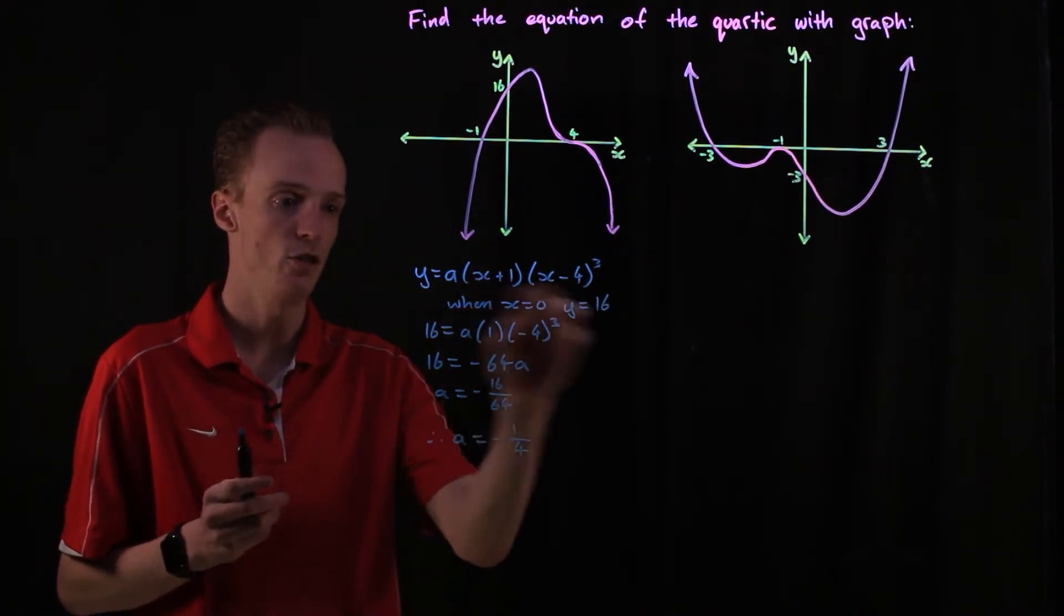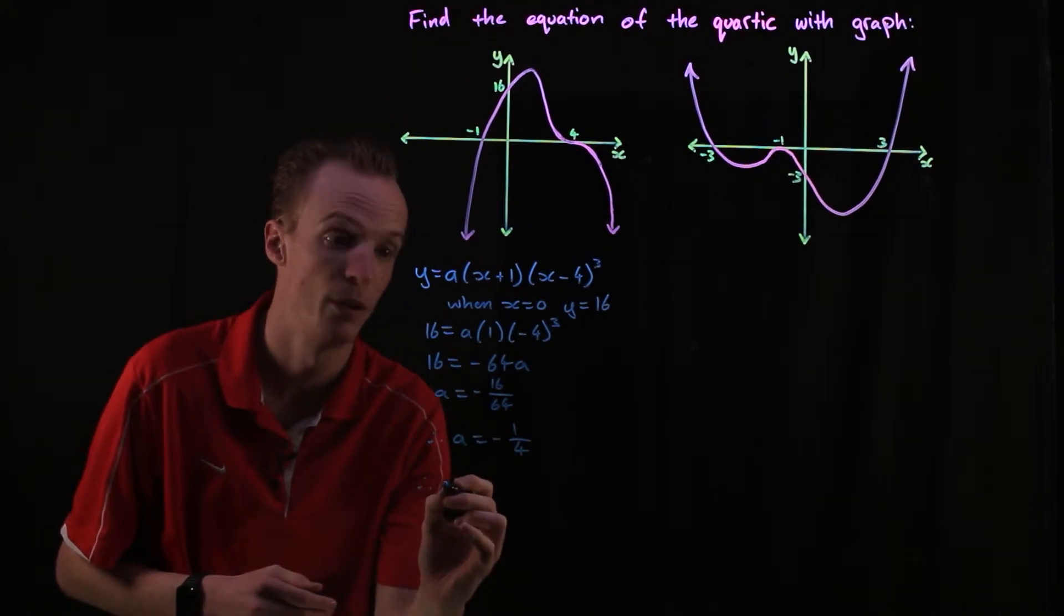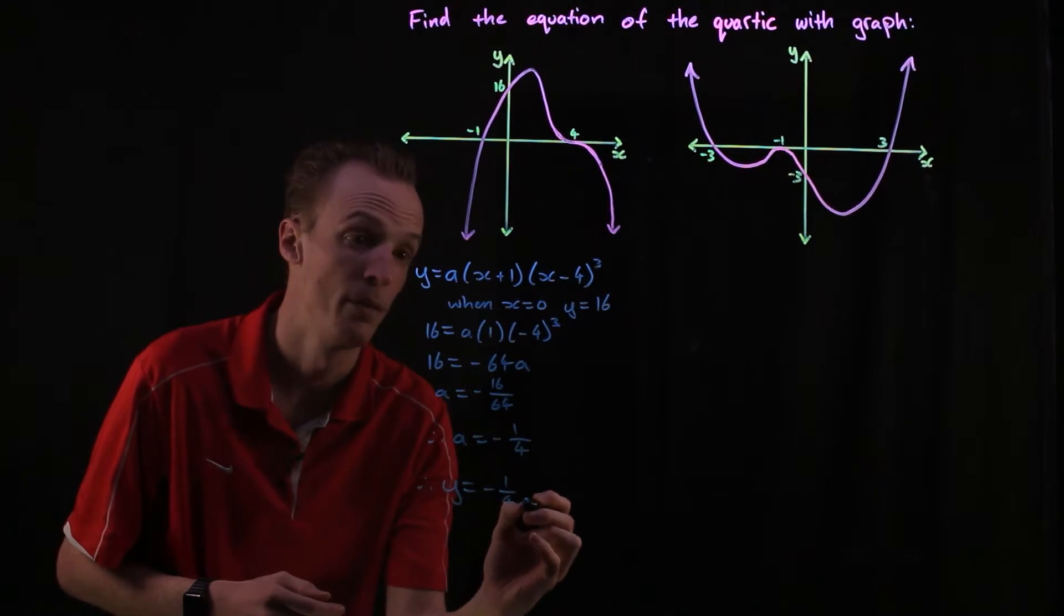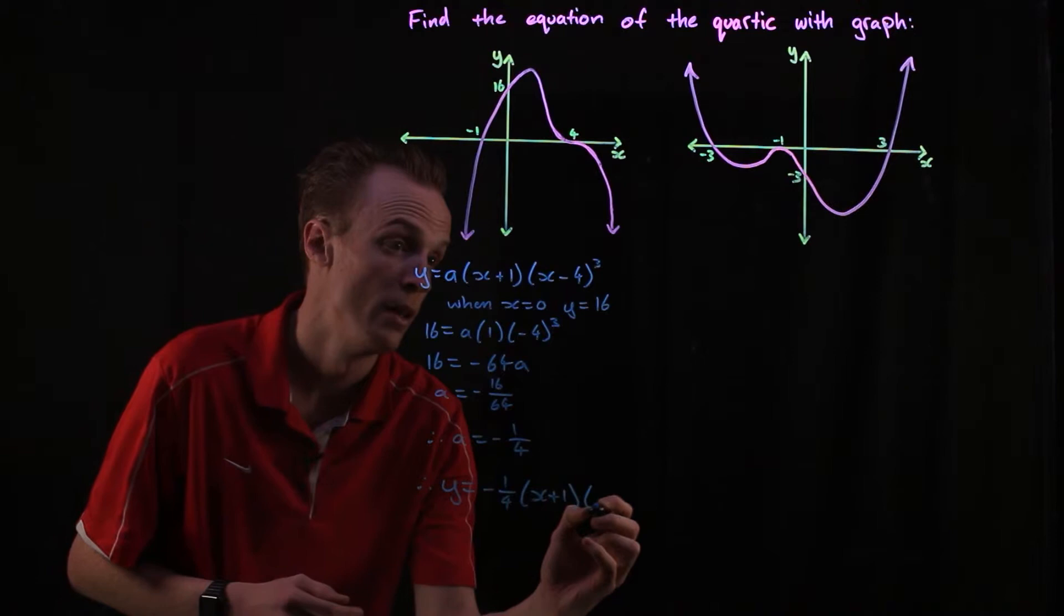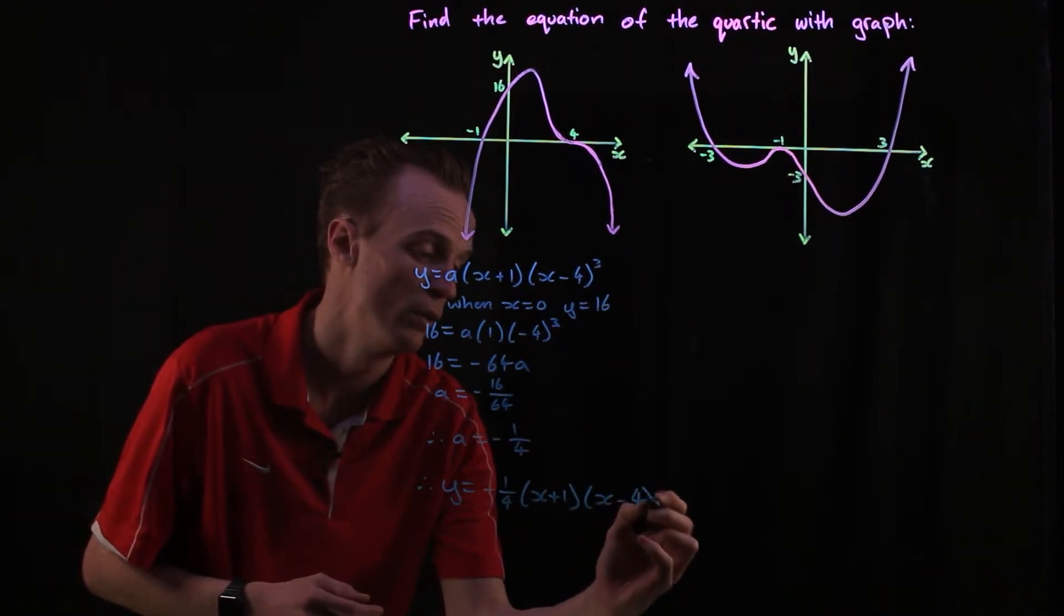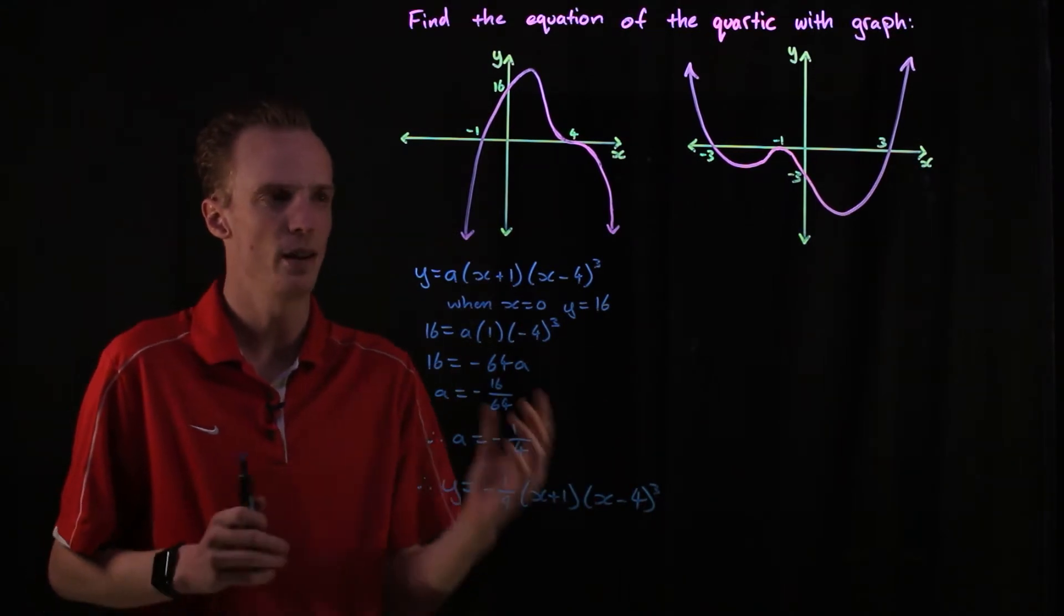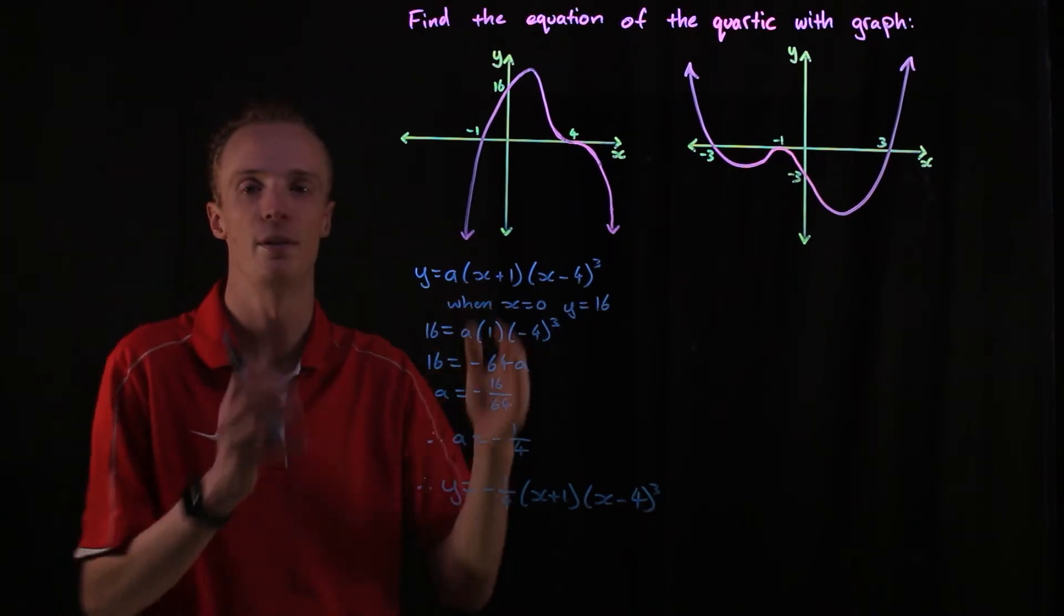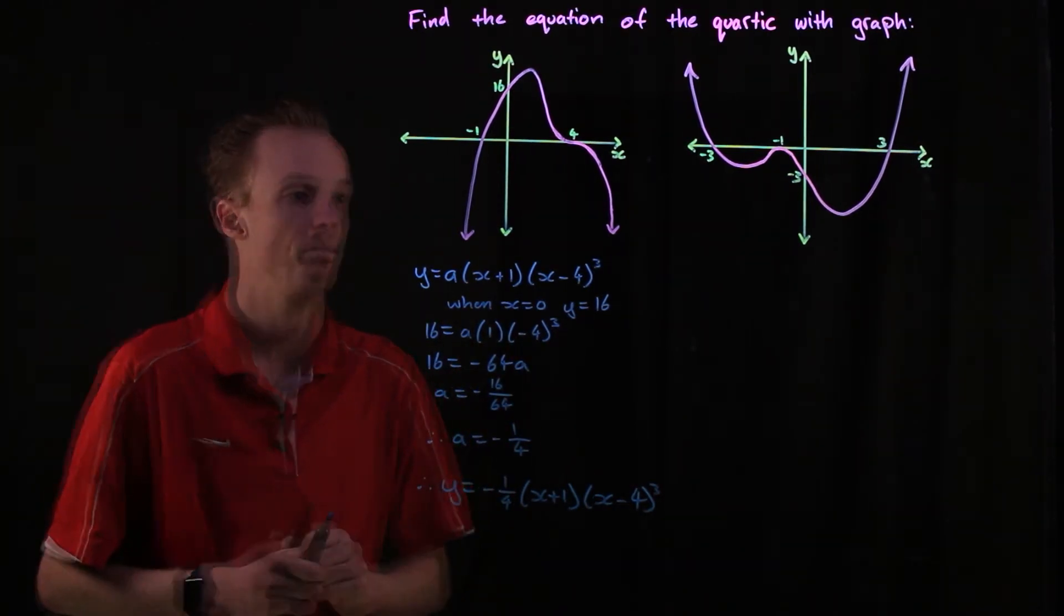To find the final equation here, I just substitute my a value back in. So what that means for my final equation is y equals negative one quarter times (x plus one) times (x minus four) all cubed. If I think about it for a moment, my a should be negative because I've got this overall concave type shape that opens downwards, so that does seem like a logical answer.